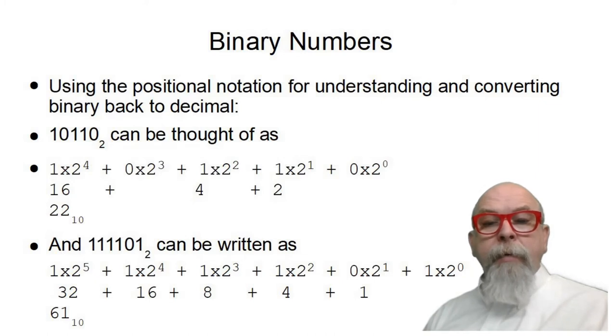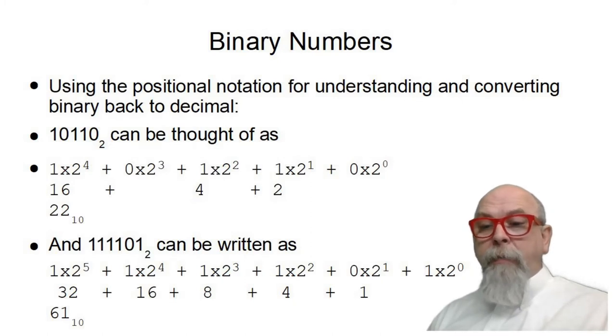In another example, 111101 can be written through the same process of positional notation and powers of 2 as 1×2⁵ + 1×2⁴ + 1×2³ + 1×2² + 0×2¹ + 1×2⁰, giving us 61 base 10. So the binary number 111101 is 61 decimal.